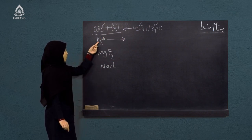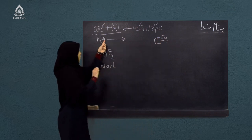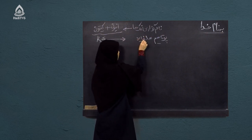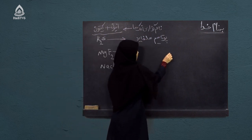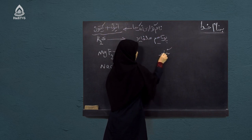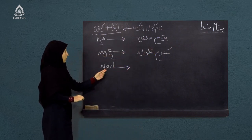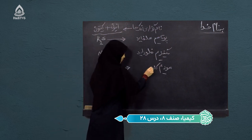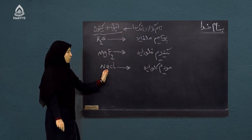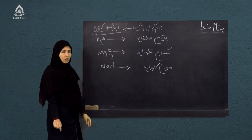نام کتیون: پوتاشیم. نام انیون مورد نظر: سلفاید. پس نام مرکب می شود: پوتاشیم سلفاید. مرکب دوم MgF₂: نام کتیون مگنزیم، نام انیون فلوراید. مرکب سوم NaCl: نام کتیون سودیم، نام انیون کلوراید. نام مرکب می شود سودیم کلوراید. پس این قسمی با توجه به نوشتن نام کتیون و نام انیون می توانیم نام نمک های مورد نظر را بنویسیم.